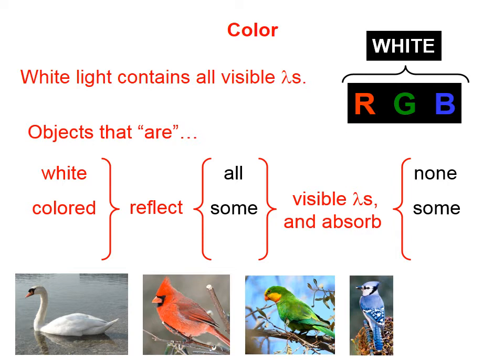This blue jay is blue because blue is reflected, and we can say red and green are absorbed. Objects that appear to us to have no color reflect no visible wavelengths and absorb all of them.